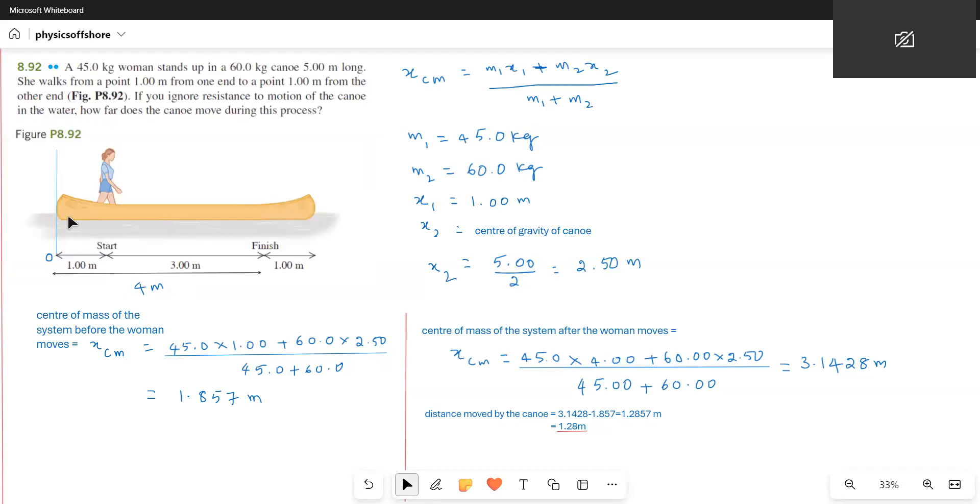Now the canoe is just like a horizontal board. Let us consider this as a symmetric object whose center of gravity lies at the center. The total length of the canoe is 5 m and its center of gravity lies at the center. That means 2.5 m from either end.